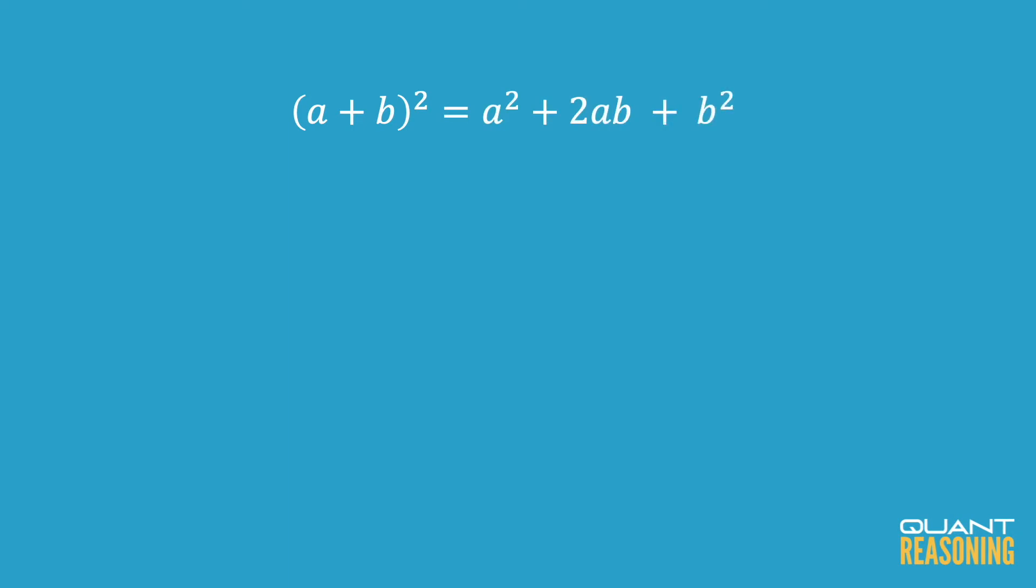So the way to square 1 plus root 2 is we'd use the special product. We know a plus b squared is a squared plus 2ab plus b squared. Applying that here, you'd get 1 plus 2 root 2 plus 2. Simplify that, you get 3 plus 2 root 2.